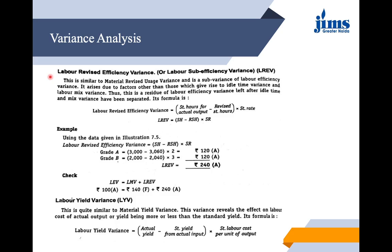Labor Revised Efficiency Variance, also called labor sub-efficiency variance, is similar to material revised usage variance. It is a sub-variance of labor efficiency variance arising due to factors other than those giving rise to idle time variance and labor mix variance. It is the residue of labor efficiency variance after idle time and mix variance are separated. The formula is: (Standard Hours for Actual Output minus Revised Standard Hours) into Standard Rate. Applying this to the previous illustration gives an adverse labor revised efficiency variance.